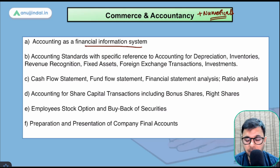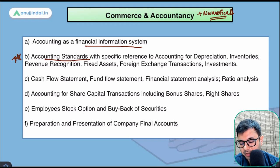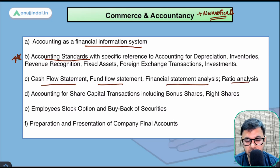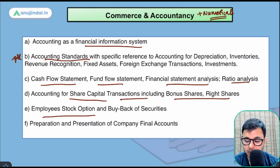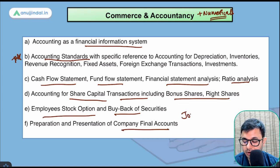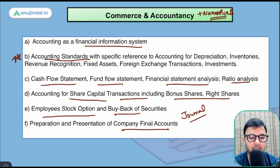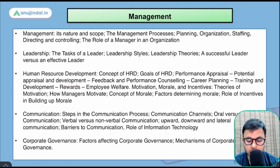In Commerce and Accountancy, key topics include: accounting as a financial information system, accounting standards (very important — many questions come from here), cash flow statement, fund flow statement, financial statement analysis, ratio analysis (mostly numerical), accounting for share capital including bonus and rights issues, ESOP, buyback, and preparation of company final accounts. Questions may be asked on journal entries and the concepts behind them.